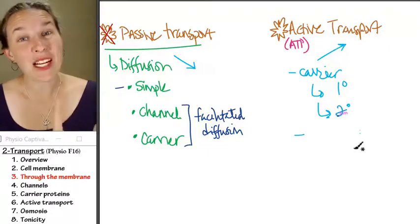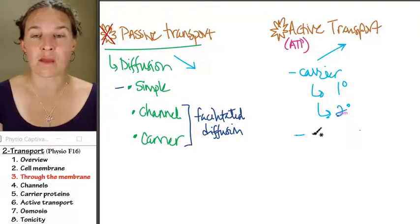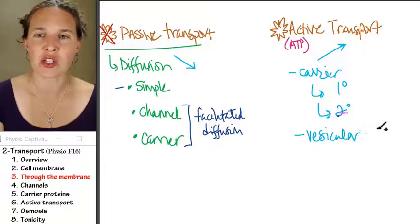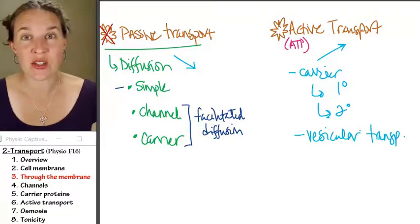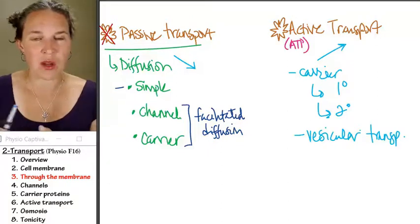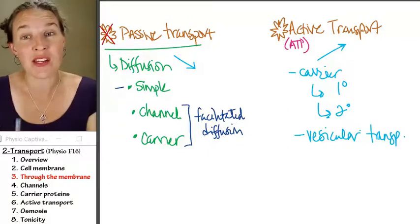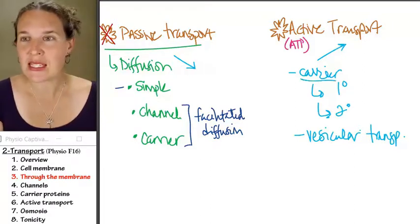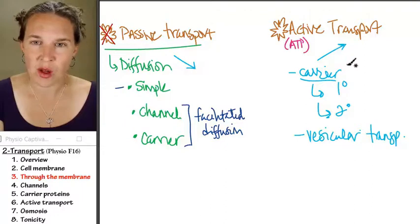Active transport also includes something called vesicular, vesicular transport, and that is endocytosis or exocytosis. Those processes, and we'll talk about those as well, they both also require energy. They're not carrier-based. These guys right here, I'm going to circle all my friends that require carriers.